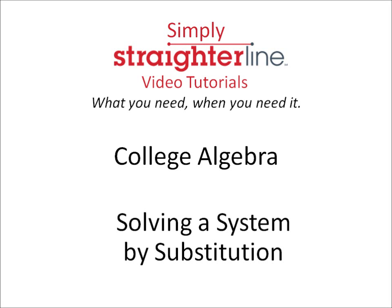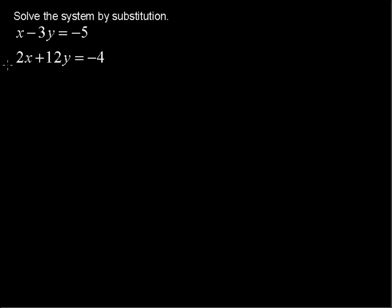How to solve the system by substitution. Solve the system by substitution: x minus 3y equals negative 5 and 2x plus 12y equals negative 4.